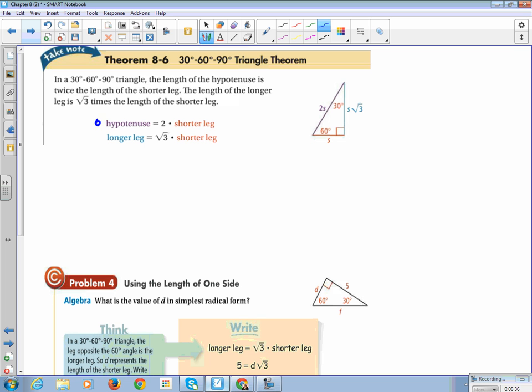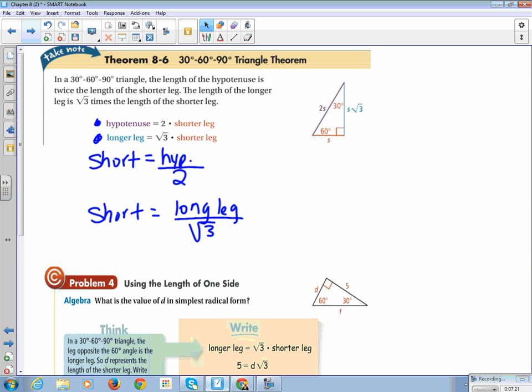In a 30, 60, 90 triangle, the hypotenuse is equal to 2 times the shorter leg. The longer leg is equal to the square root of 3 times the shorter leg. And then, your short leg is equal to your hypotenuse divided by 2. It's also equal to your long leg divided by root 3. Those are two extra bonus formulas that they do not give you in the book.